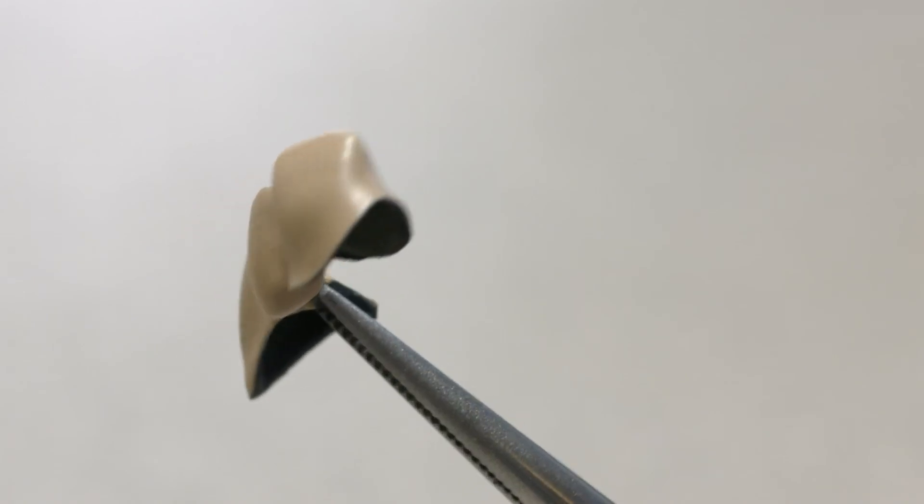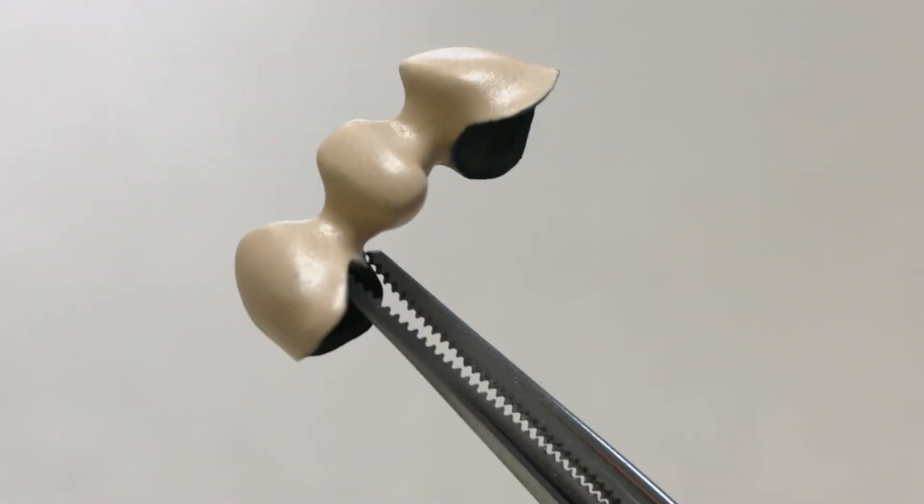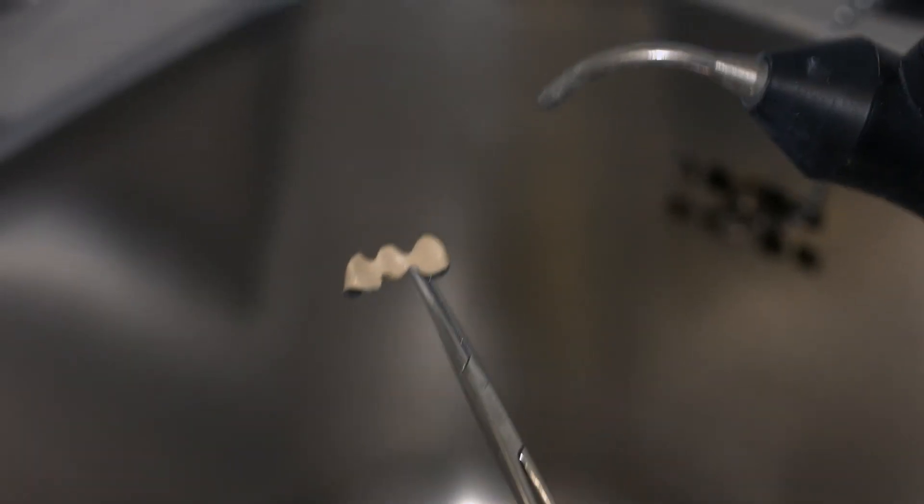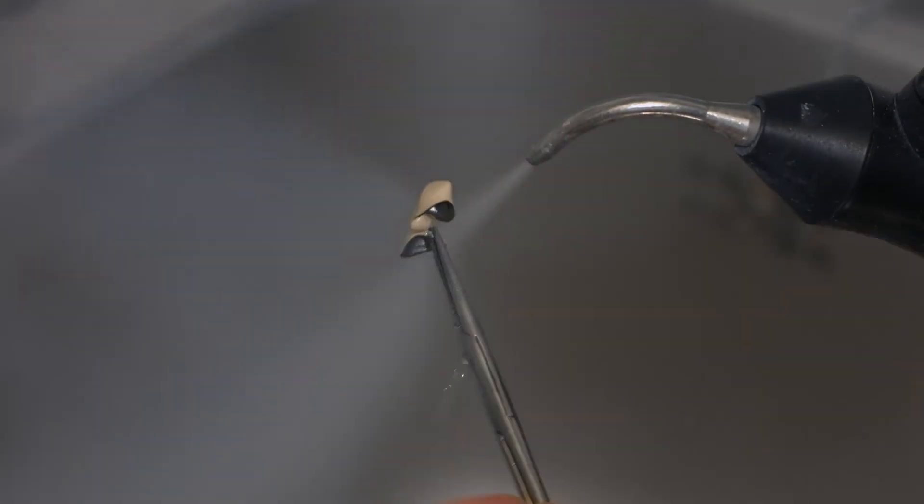The veneering surfaces of the alloy framework must be entirely covered with opaquer. Thoroughly clean the metal framework using the steam jet before you start to apply the ceramic material.